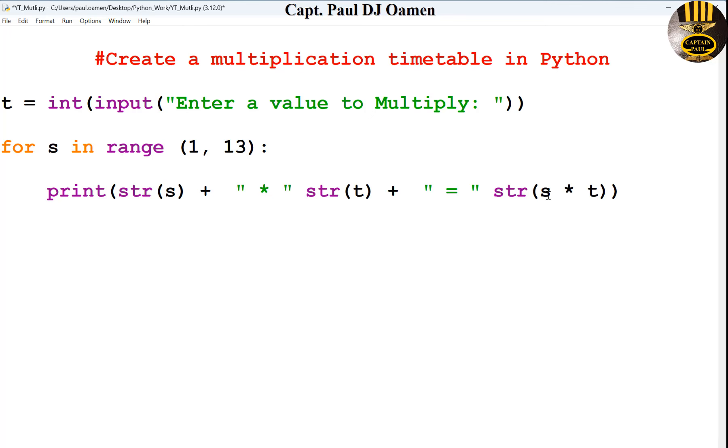s multiply by T. Whatever value you enter is stored in T, and this number that is generated is then multiplied by T. That should give us whatever multiplication timetable we want. So I'm going to run that.